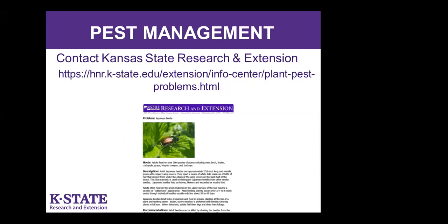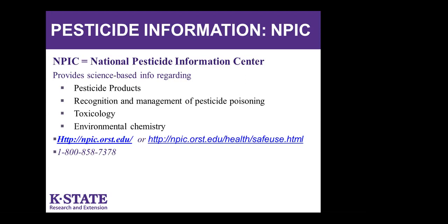If you need to understand how to manage a pest, contact your local K-State Research and Extension office. There's also a great website — the plant pest problems page — where you can click on a pest like Japanese beetles, find a one to one and a half page document about their life cycle and recommended control strategies. The National Pesticide Information Center is another great resource for pesticide information. Cheryl is going to put all these resources on the web page.